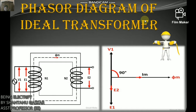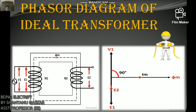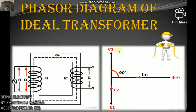The phasor diagram of the single-phase ideal transformer is shown. As the primary coil is purely inductive, the magnetizing current lags the input voltage V1 by 90 degrees. E1 and E2 are the EMFs induced in the primary and secondary winding. The direction of induced EMF is opposite to the applied voltage. The input energy equals output energy, and power loss in the ideal transformer is zero.